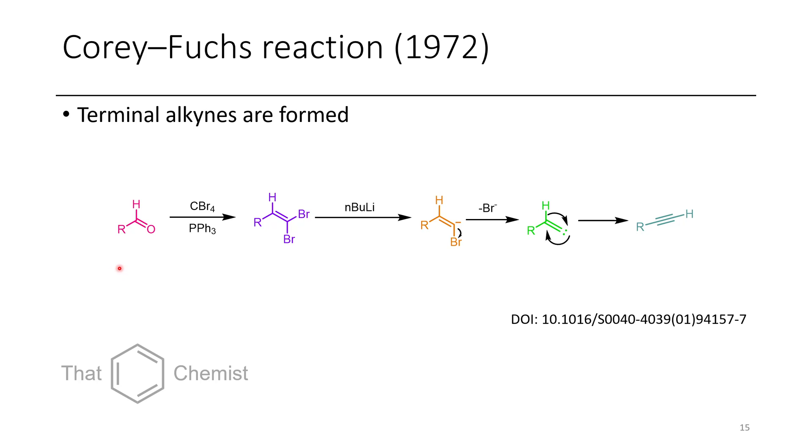Okay, now the Corey-Fuchs reaction is similar, except the overall transformation is you start with an aldehyde, you do a Wittig reaction with carbon tetrabromide, which installs this vinyl dibromide. You can then lithiate like this, and then through a 1,2 shift, you end up with a terminal alkyne.